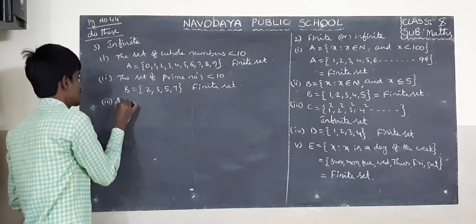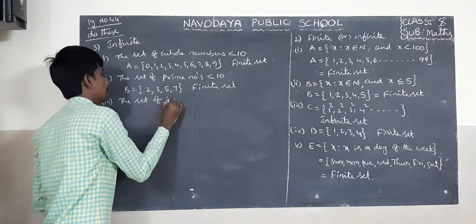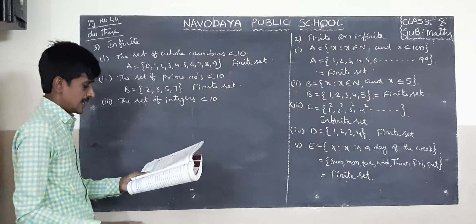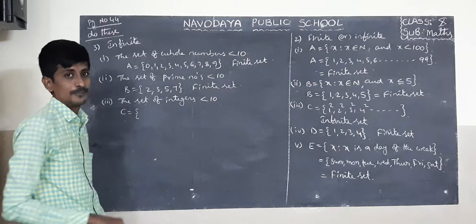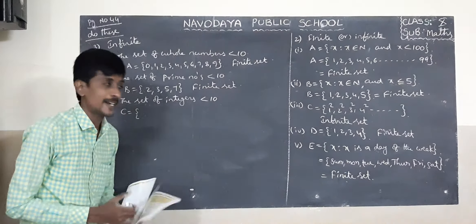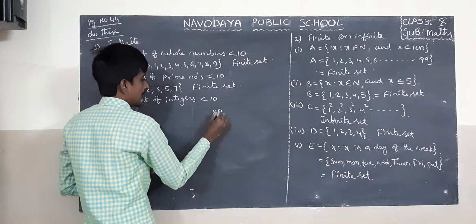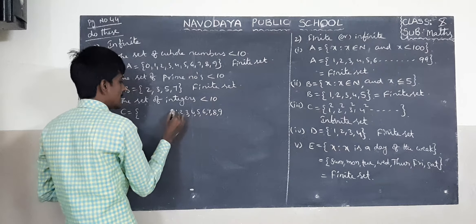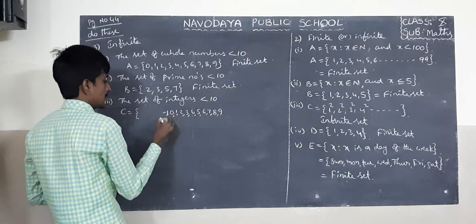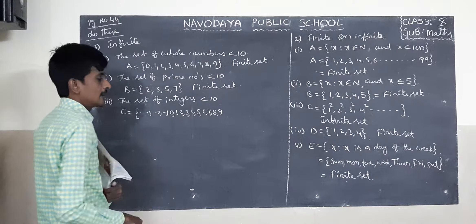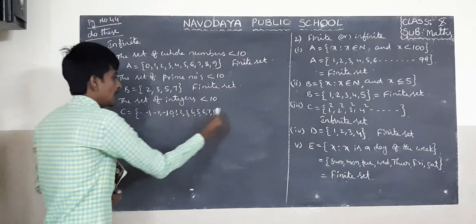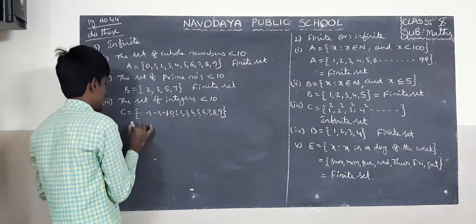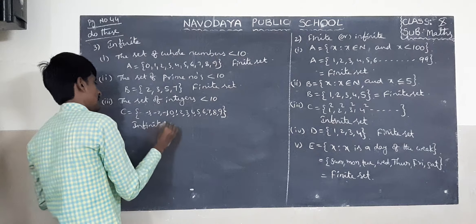Third one: the set of integers greater than 10. C equals integers — positive numbers and negative numbers. Greater than 10 means 9, 8, 7, 6, 5, 4, 3, 2, 1, 0, minus 1, minus 2, minus 3, and so on. It cannot be ended. So it is an infinite set.